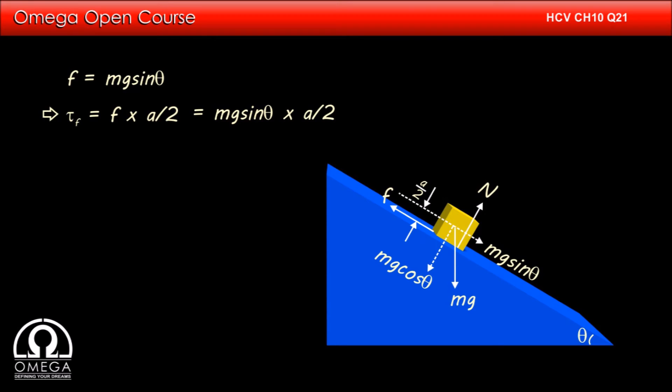Since the block is in rotational equilibrium, net torque about its center of mass must be zero. But torque due to gravitational force about center of mass of the block is zero as gravitational force acts on the center of mass itself. So, the torque due to friction must be balanced by the torque due to normal. Hence, torque due to normal force is equal to torque due to friction, i.e., A by 2 into Mg sin theta. This is our answer.